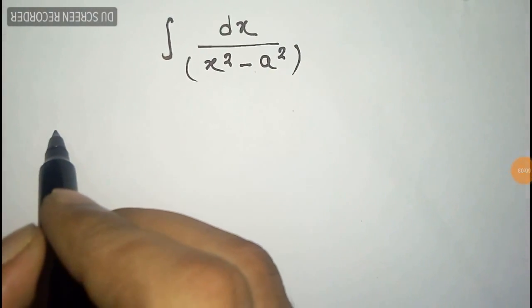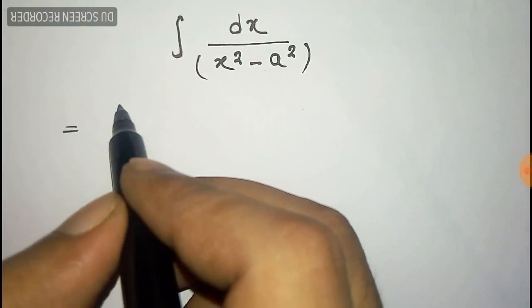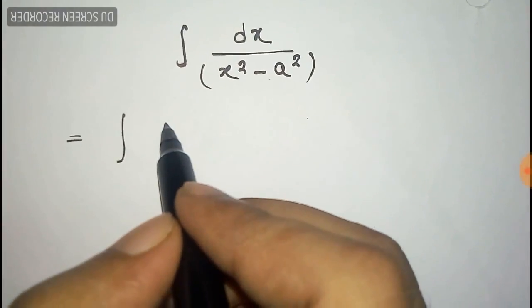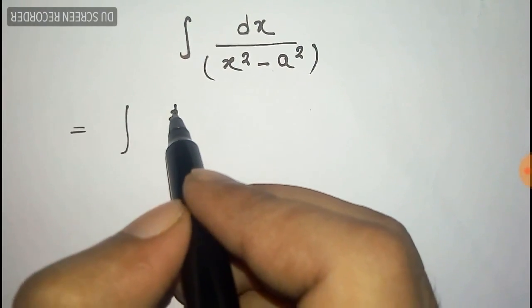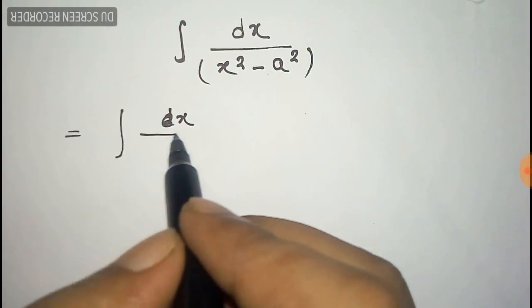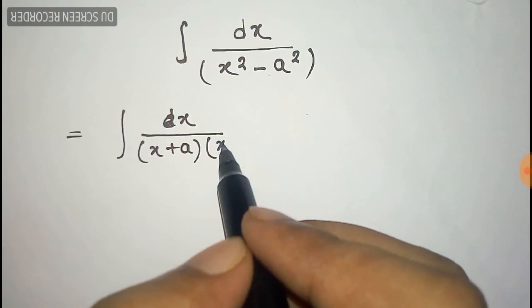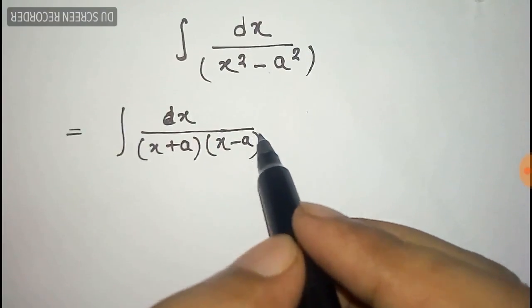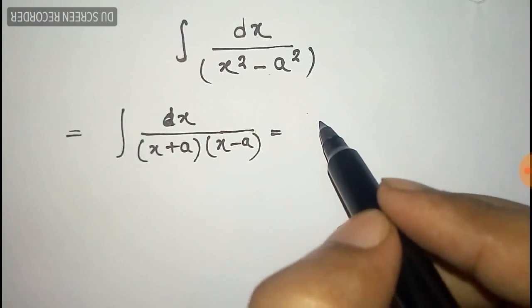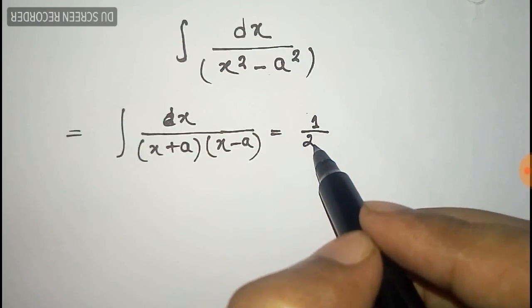We have to integrate dx by x square minus a square, where a is a constant. For this, first of all we write x square minus a square as x plus a into x minus a, and we take one by two a common.